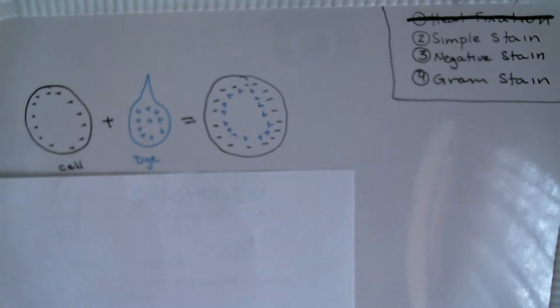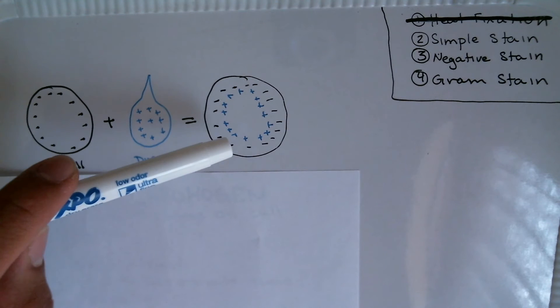Next up, we're going to go over a simple stain. So with our simple stain, the concept is pretty simple: we have a cell here that has a negative charge, and we mix it with a dye that has a positive charge.